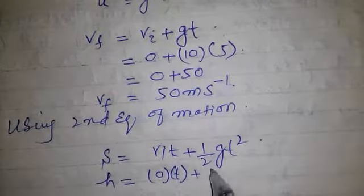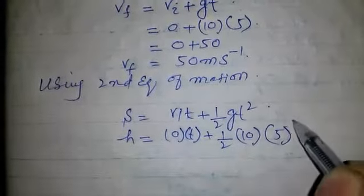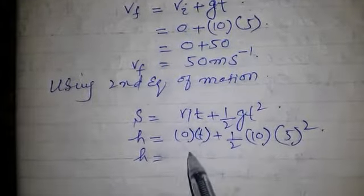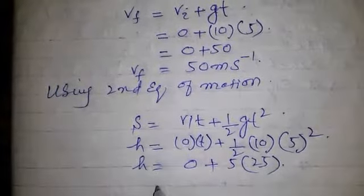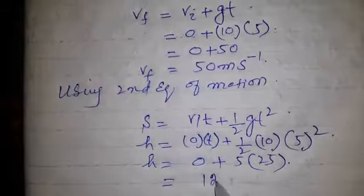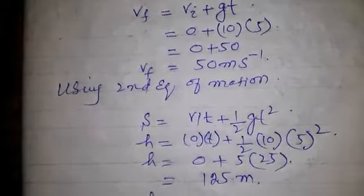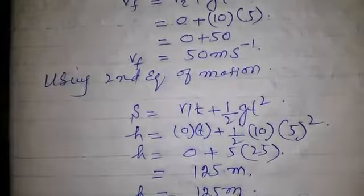So h is equal to 0 plus 5 into 25, which is equal to 125 meters. So height h is equal to 125 meters.